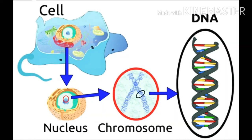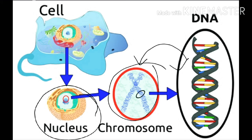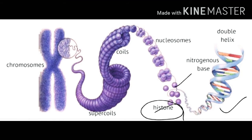Eukaryotic cells contain linear DNA, and it is present inside the nucleus. DNA is a component of chromosomes — the chromosomes are made of DNA. The nuclear DNA in eukaryotic cells is associated with a protein called histone, so histone proteins are attached to the DNA.